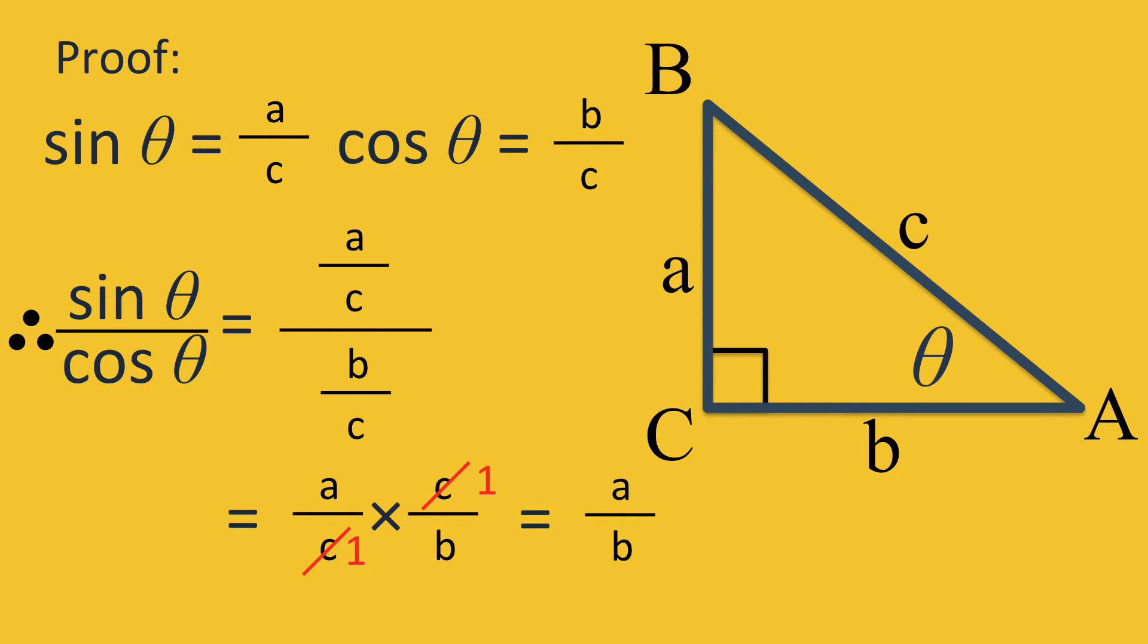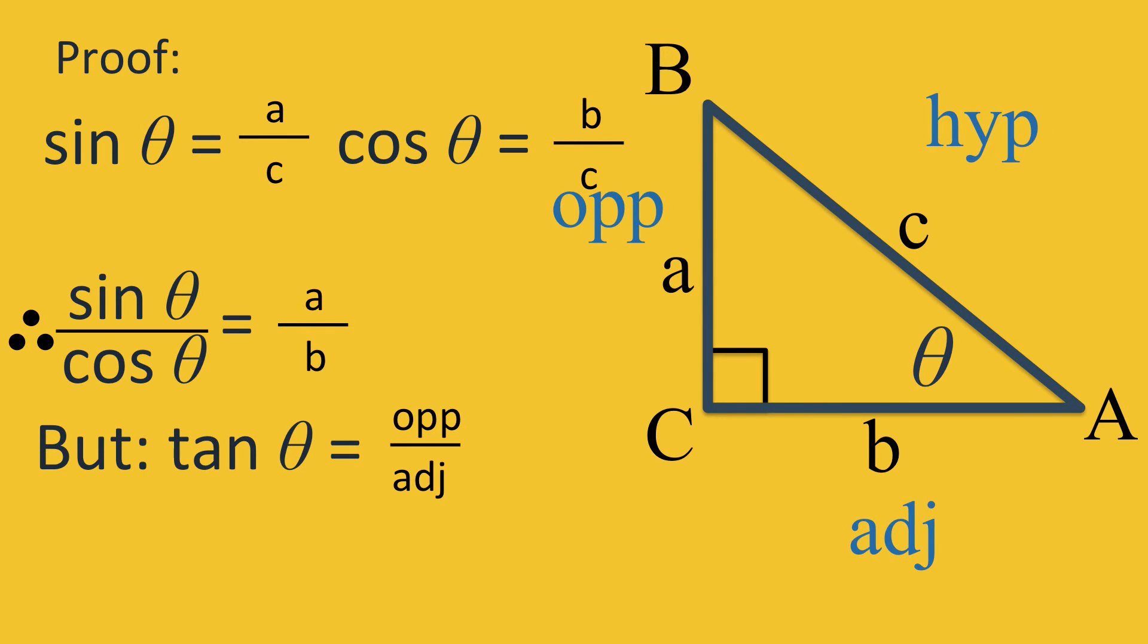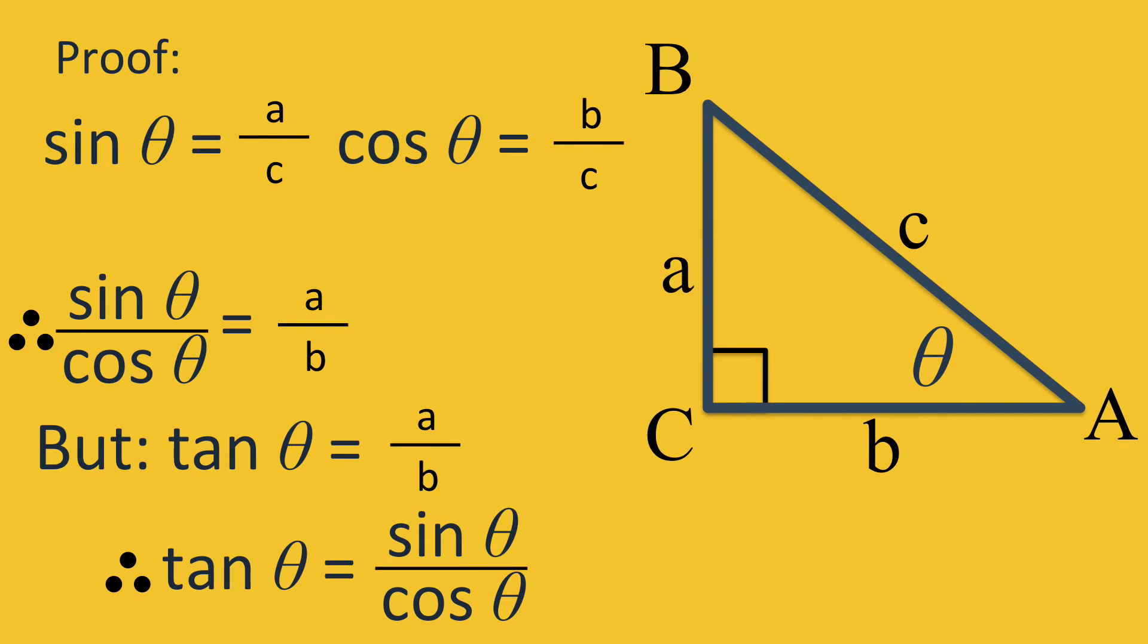So sine theta over cosine theta equals A over B. But the tan of theta equals opposite over adjacent, or A over B. Therefore, tan theta equals sine theta over cosine theta.